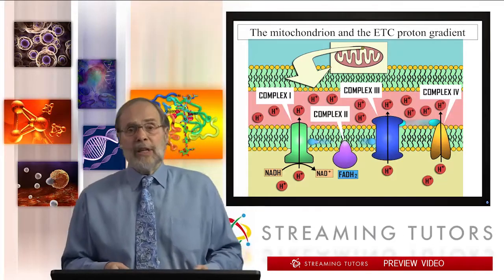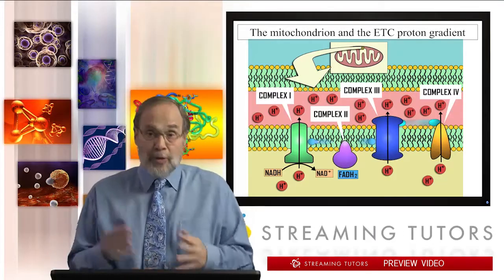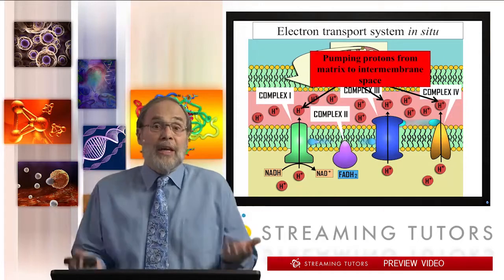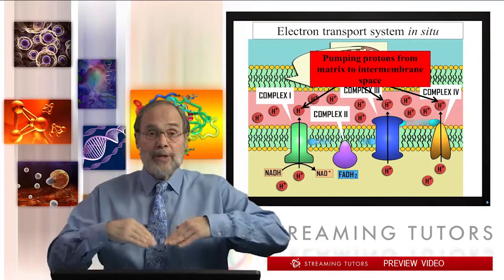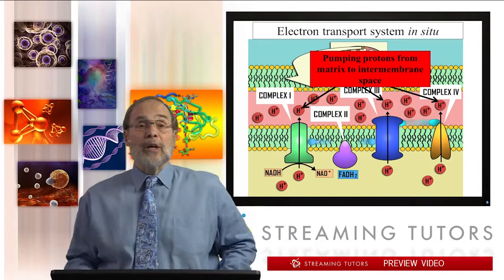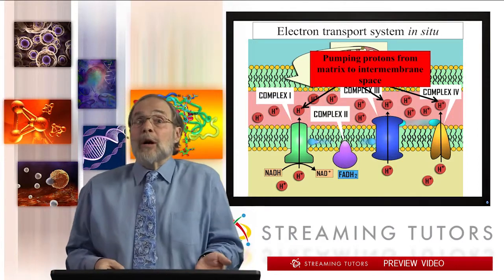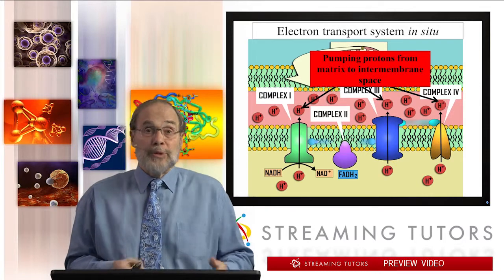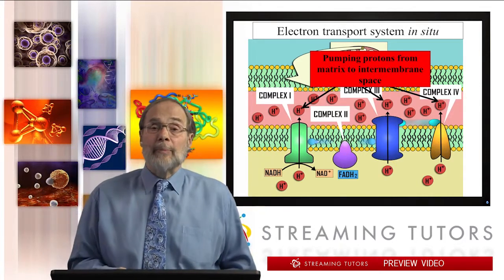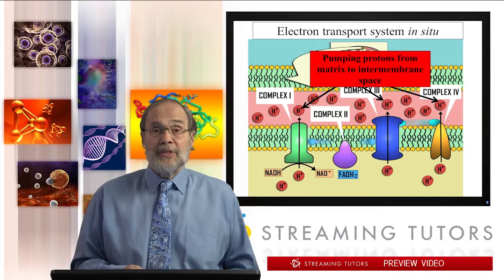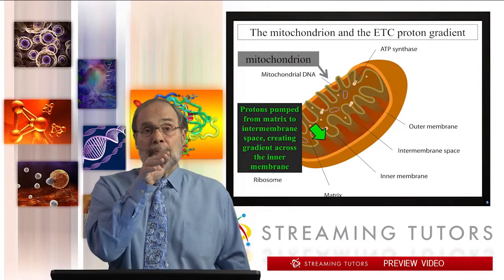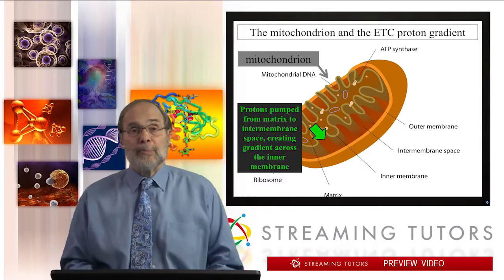So these are the four complexes in the electron transport system that we talked about earlier. Notice what they do: they're all pumping protons to the outside — from the matrix into the inner membrane space, the space between the inner and outer membranes — pumping them across the inner membrane. That's the whole reason for being of the electron transport system. This happens in the mitochondria, so matrix protons are pumped into the inner membrane space.